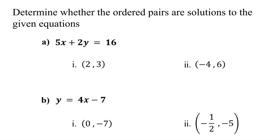In this lesson, you will learn how to determine whether an ordered pair is a solution to a linear equation in two variables. A linear equation in two variables has infinitely many solutions. For every value substituted for x, there is a corresponding value for y. This pair of values is represented as an ordered pair x comma y.